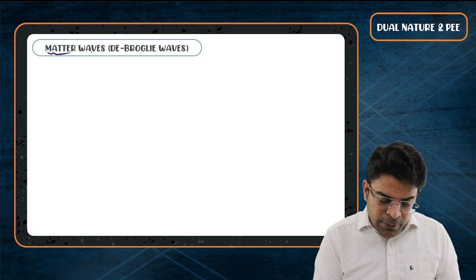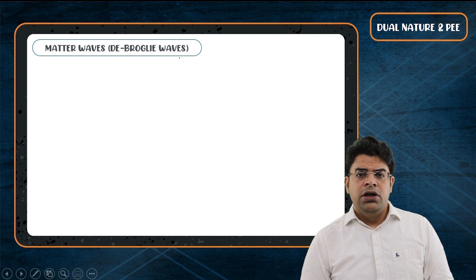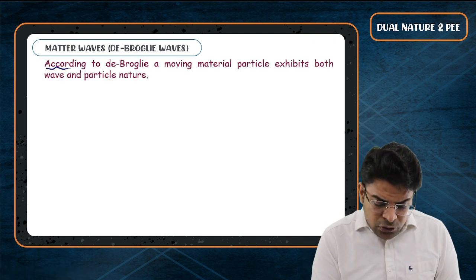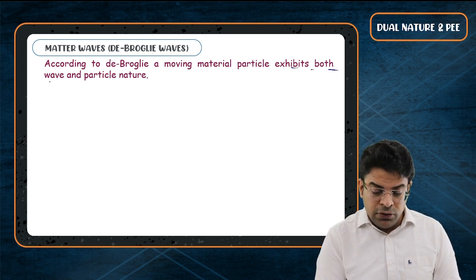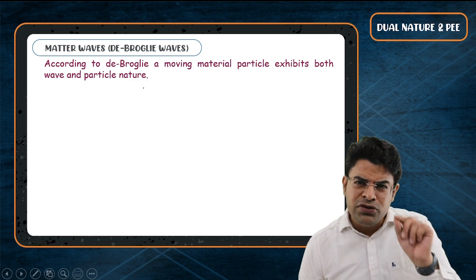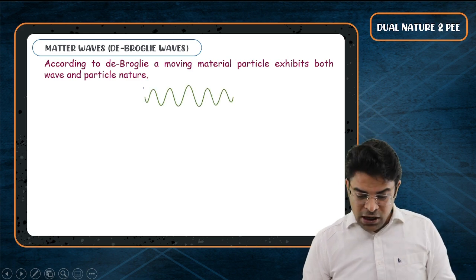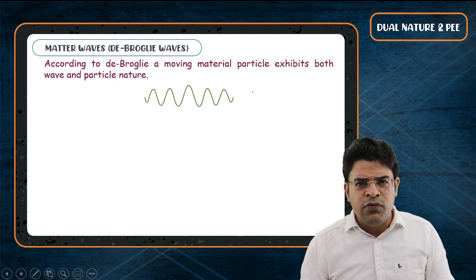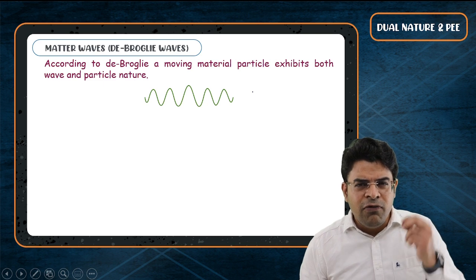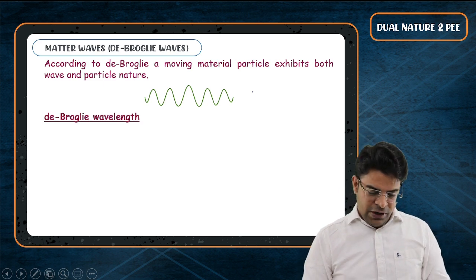Let's talk about matter waves, which are also called de Broglie waves. According to de Broglie, a moving material particle exhibits both wave as well as particle nature. So even when you start moving, there is a wave nature associated with your motion. The big question is: why have we never observed it?